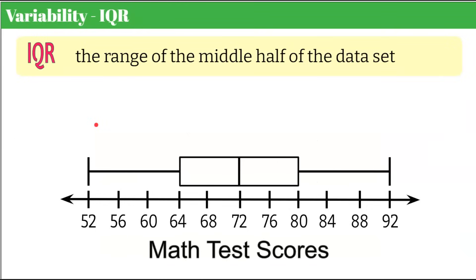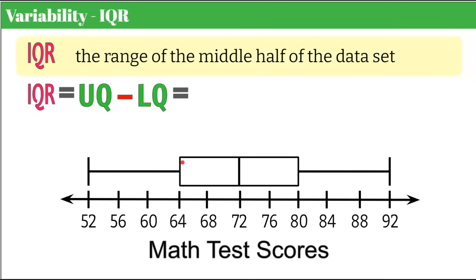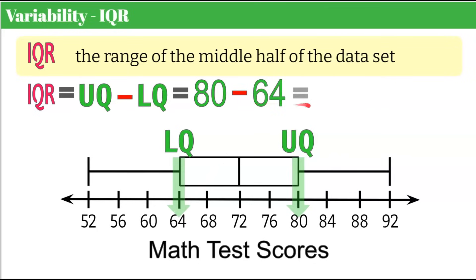Now let's talk about IQR. IQR is typically discussed with a box and whisker plot — it's the range of the middle half of the data set, meaning the distance between the beginning and end of the box. To find it, take the upper quartile and subtract the lower quartile. Our upper quartile is 80 and our lower quartile is 64, so 80 minus 64 gives us an IQR of 16. The range of scores from the lower to upper quartile is 16 points.